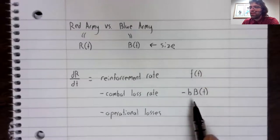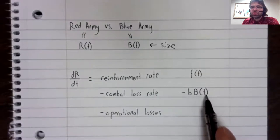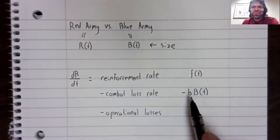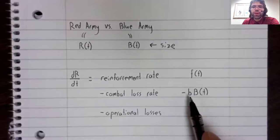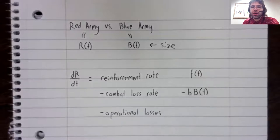So B of T is just the size of Blue Army. B is a number measuring how well trained and well equipped the soldiers are.